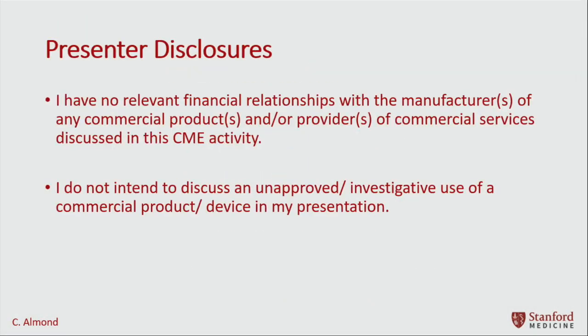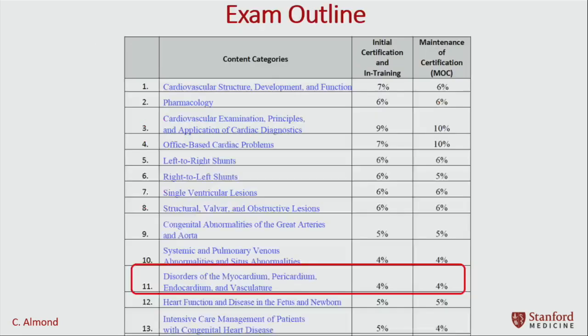I have no financial disclosures. In terms of the AAP exam outline, you can see that disorders of the myocardium, pericardium, and endocardium represent about 4%. But it's important to realize that a lot of the questions fall into other categories like outpatient practice and the cardiac ICU. So the coverage actually is more than what would be suggested by this look at the outline.